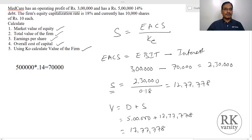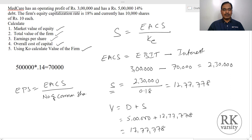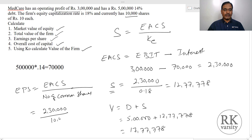Then earnings per share, or EPS, equals earnings available to common shareholders divided by the number of common shares. This equals 2 lakhs 30,000 divided by 10,000 shares, which gives earnings per share of rupees 23.